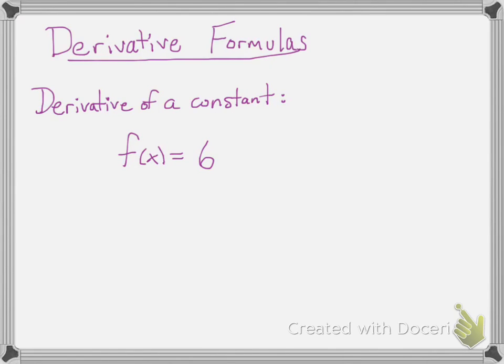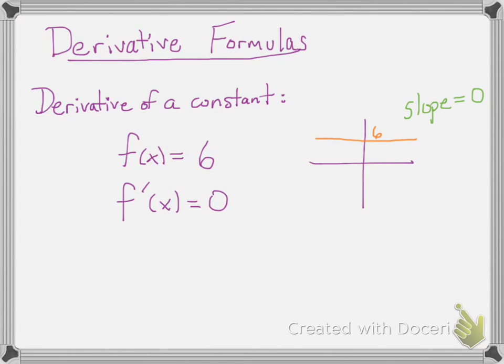Derivative of a constant function. If you graph that, it's just a horizontal line, and so the slope is zero. Therefore, the derivative, f prime of x, is zero.